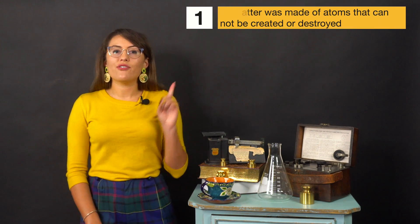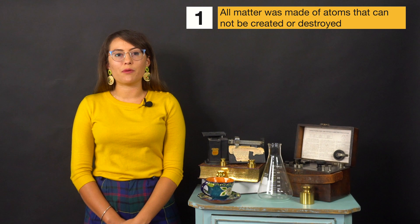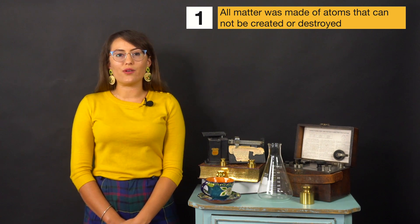One of the first theories regarding atomic structure was proposed by John Dalton in 1808. Dalton's atomic theory could be broken down into four main parts. First, all matter was made of atoms, which are tiny indivisible particles that could not be created or destroyed.